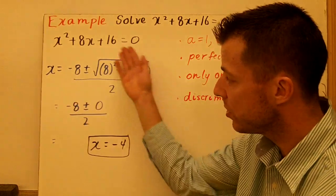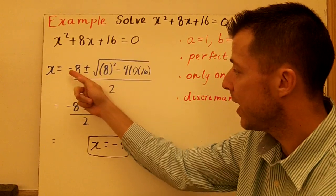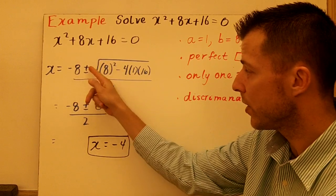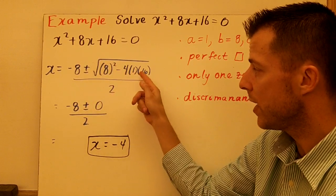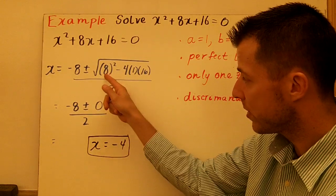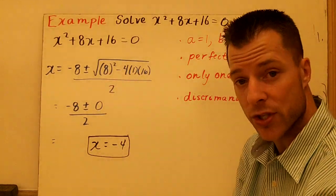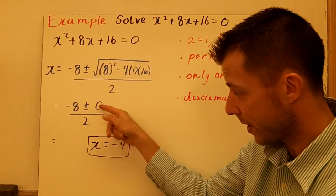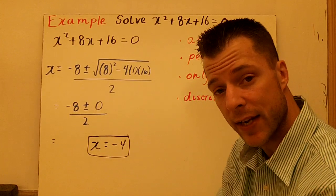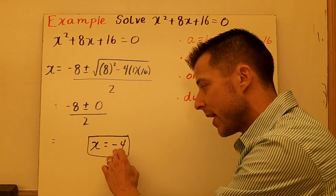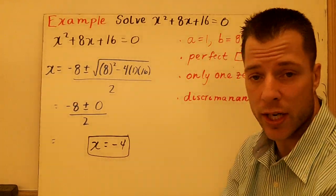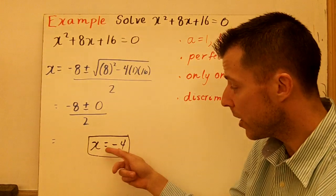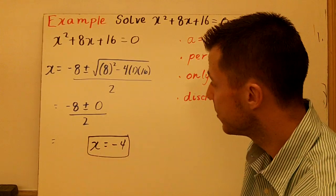By substitution into the quadratic formula, I have negative 8, the opposite of my B value, plus or minus B squared minus 4AC, all divided by 2. This will be 64 minus 64, which is 0. So negative 8 plus or minus 0 over 2, which is just negative 8 divided by 2. The answer is negative 4. We'll get into talking about multiplicity. There will be actually two zeros there, but it's going to be a repeated zero, so you just write it once.